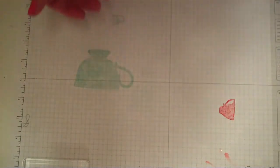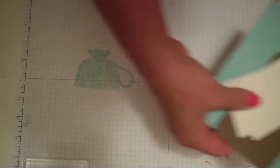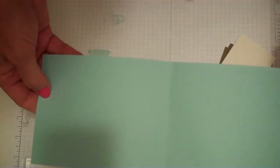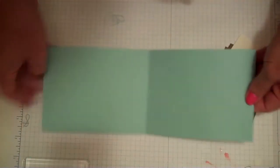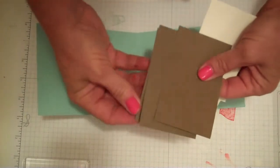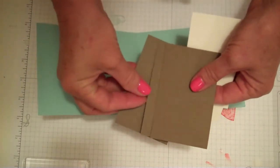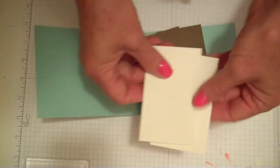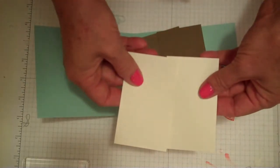Go grab your supplies and come on back. For cardstock, you're going to need a piece of pool party four and a quarter by eleven, one piece. You're going to need three pieces of soft suede that are four by two and a half.